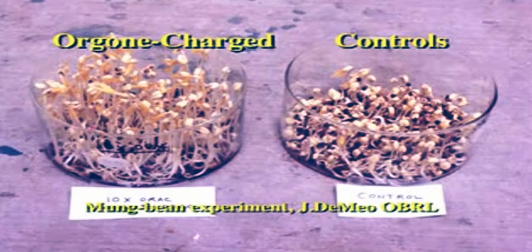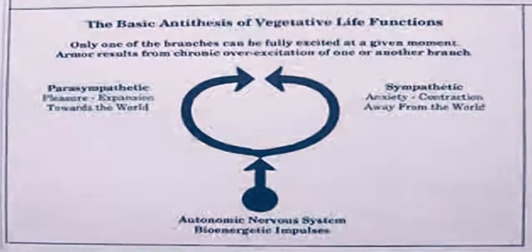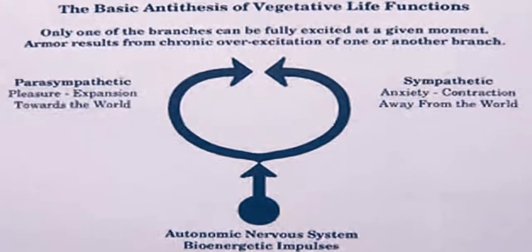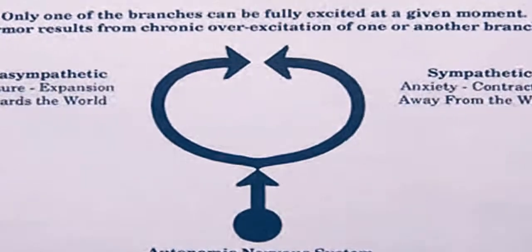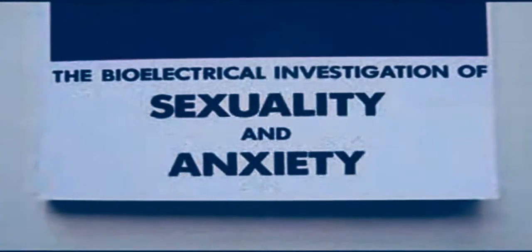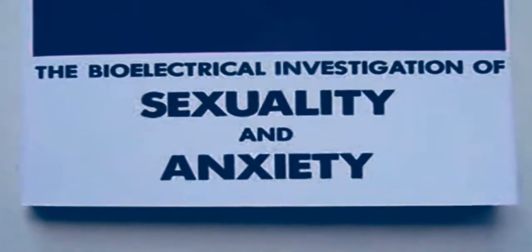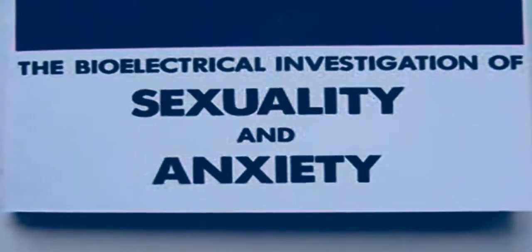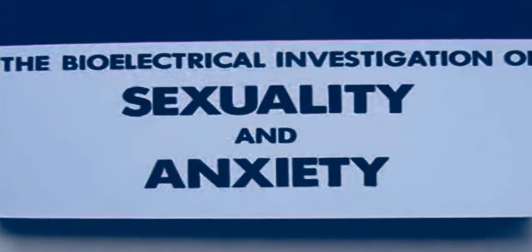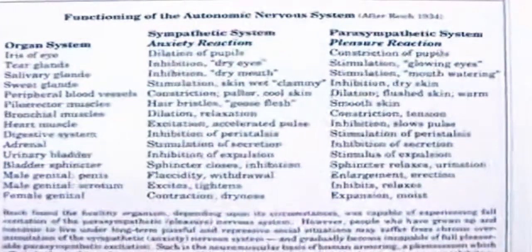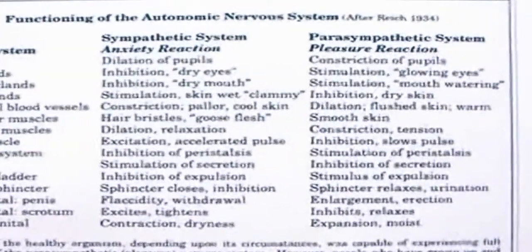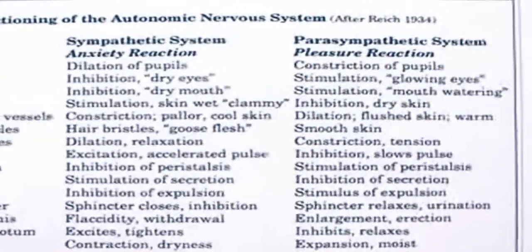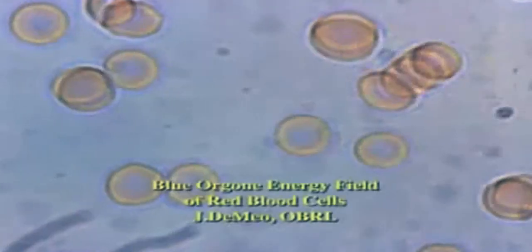The orgone accumulator allowed a high charge of orgone to collect inside itself, facilitating its direct study and revealing many of its properties. Dr. Reich observed the orgone energy charge in the human biosystem was expressed in emotion and sexuality and could be measured bioelectrically. A person's overall vitality and aliveness was a function of human and atmospheric orgone charge and pulsation, and this could often be increased by sitting inside the orgone accumulator.